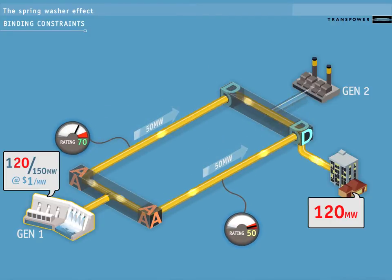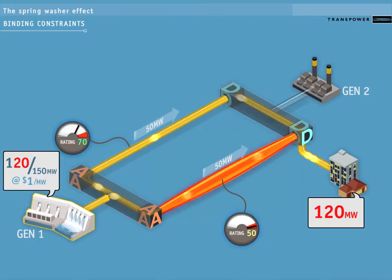Given that it is already carrying 50 megawatts, it is constrained. This is known as a binding constraint on the transmission system. You would think the extra 20 megawatts could be sent through the line with the higher rating. Unfortunately, we can't do that. Kirchhoff's law dictates that the power would be distributed equally between the lines. This means 60 megawatts through each line.